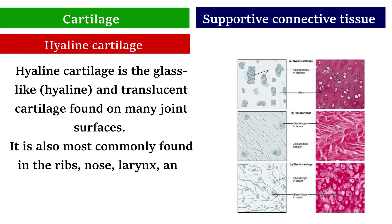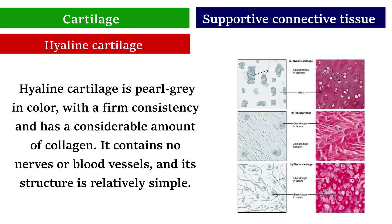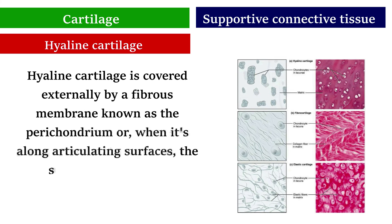Hyaline cartilage is glass-like, translucent cartilage found on many joint surfaces. It is also commonly found in the ribs, nose, larynx, and trachea. It is pearl-gray in color with a firm consistency and has a considerable amount of collagen. It contains no nerves or blood vessels. Hyaline cartilage is covered externally by a fibrous membrane known as the perichondrium, or, along articulating surfaces, the synovial membrane.